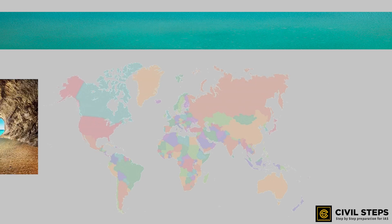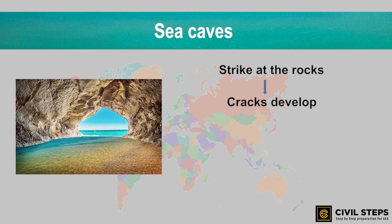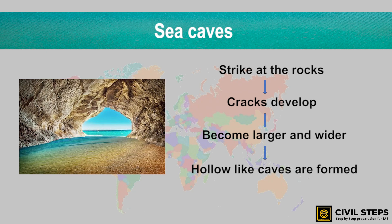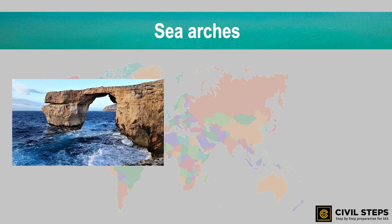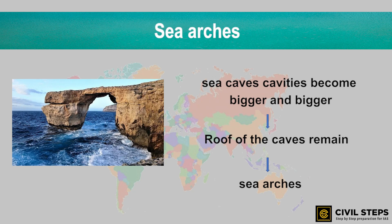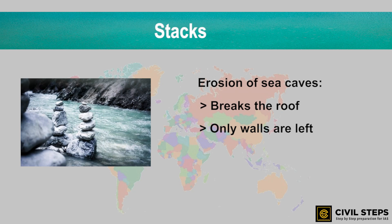Sea waves continuously strike at the rocks and cracks develop within them, becoming larger and wider over time. Hollow cave-like formations on the rocks are called sea caves. As sea cave cavities become bigger and bigger, only the roof of the caves remains, thus forming sea arches. Further erosion breaks the roof of the sea caves, leaving only the walls, and these wall-like features are called stacks.